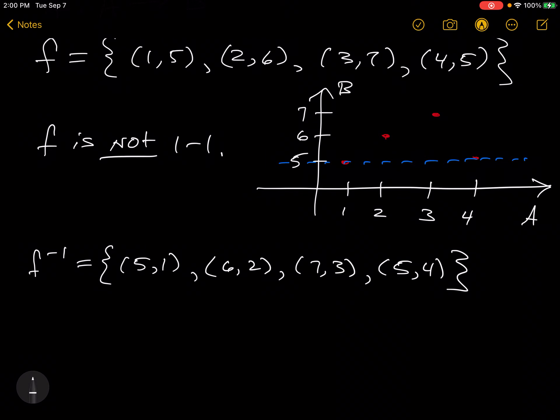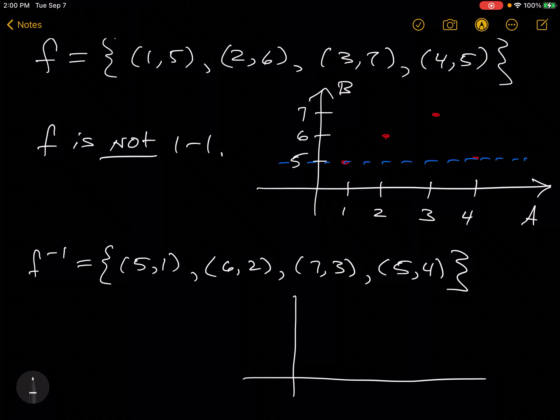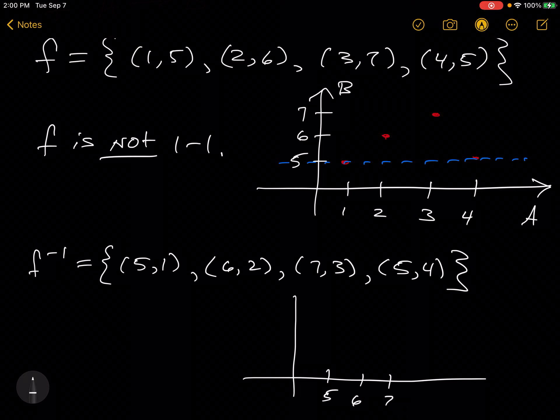And now let's graph f inverse. 5, 6, 7. So here we'll have B. There we'll have A.